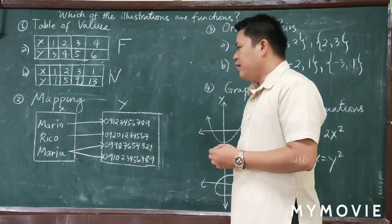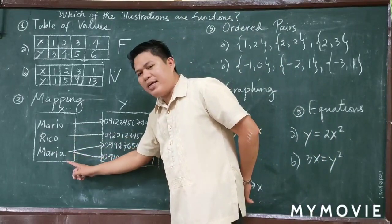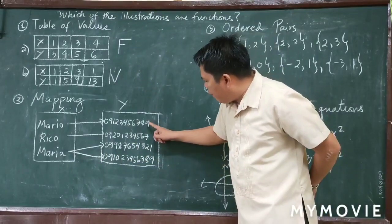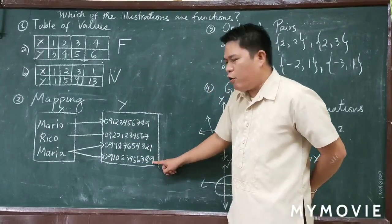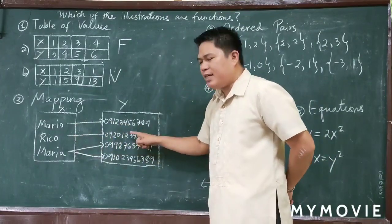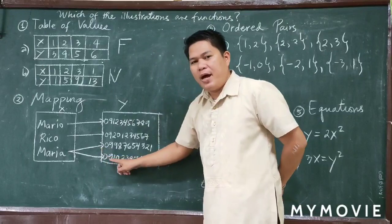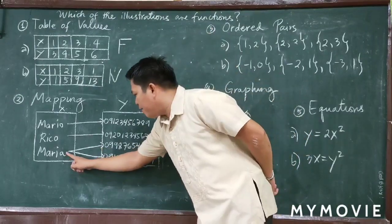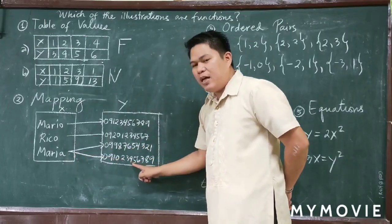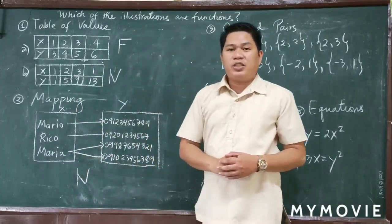For mapping, the same procedure applies. Our X has the names Mario, Rico, and Maria, and our Y represents cell phone numbers — we have 4 cell phone numbers. Mario has only one cell phone number, Rico has only one cell phone number, but Maria has two cell phone numbers. Since Maria maps to two values, this is not a function.